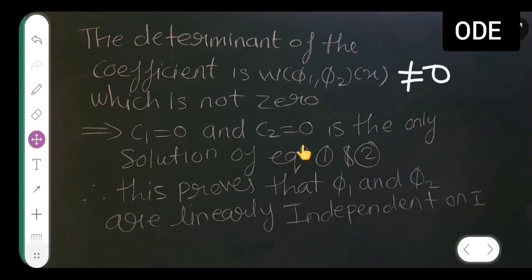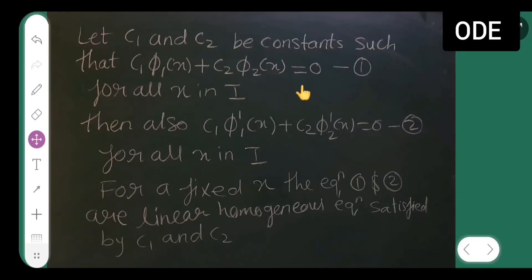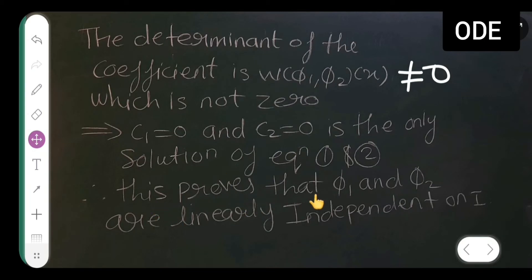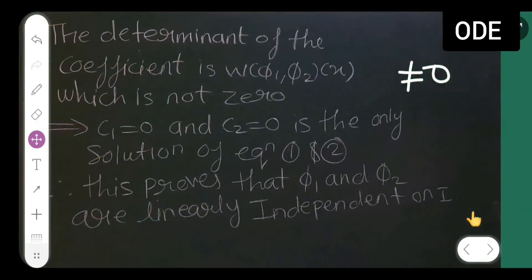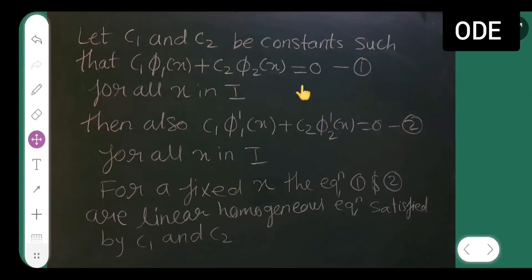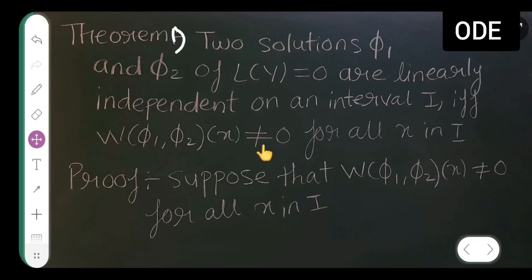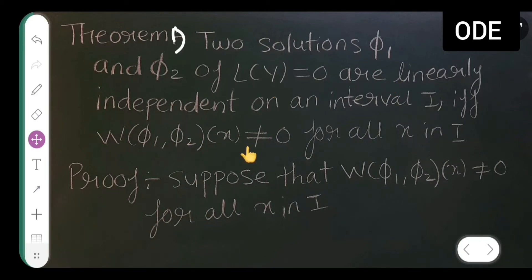Since c1 and c2 are both 0, this proves that phi 1 and phi 2 are linearly independent on interval I. So we have proved the forward direction: W ≠ 0 implies phi 1 and phi 2 are linearly independent. Now we take the converse: assume phi 1 and phi 2 are linearly independent and prove W ≠ 0.